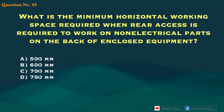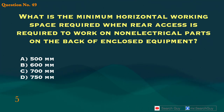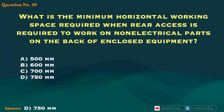Question 49. What is the minimum horizontal working space required when rear access is required to work on non-electrical parts on the back of enclosed equipment? A. 500 millimeters. B. 600 millimeters. C. 700 millimeters. D. 750 millimeters. Answer: D. 750 millimeters.